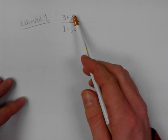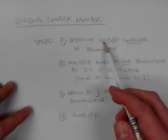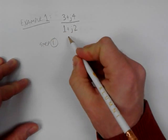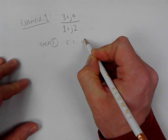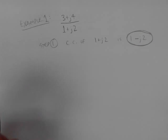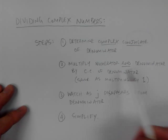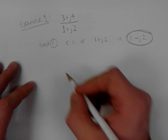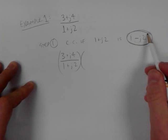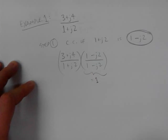Here's an example. I have a complex number divided by another complex number. Step one: determine the complex conjugate of the denominator. The complex conjugate of one plus j2 is one minus j2. Step two: multiply the numerator and the denominator by that complex conjugate. So I take my complex number — 3 plus j4 over one plus j2 — and multiply it by one minus j2 over one minus j2, which is really multiplying by one.